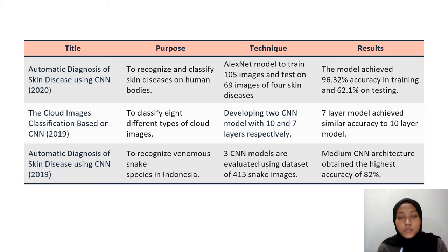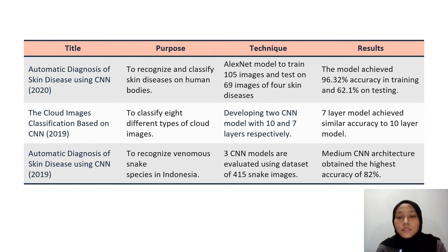There are three literature reviews that I have referred to for my project. The first one is automatic diagnosis of skin disease using CNN, which aims to classify four types of skin disease on human bodies. It used a LexNet model to train on 105 images and test on 69 images. Even with the limited number of images, the model obtained 96.32% accuracy in training and 62.1% in testing accuracy, showing that even with a small dataset the model is able to classify skin disease correctly.